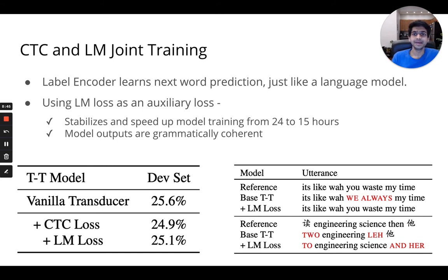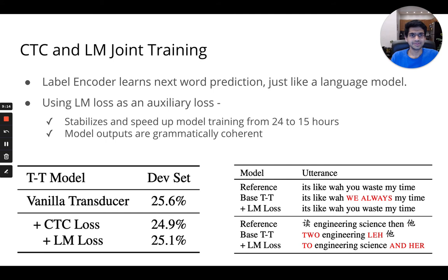The label encoder of the transformer transducer learns to do next-word prediction, just like a language model. Using the LM objective as an auxiliary loss helps stabilize and speed up model training from almost 24 hours to 15 hours. Although this does not give improvement in performance, the model output does seem grammatically more coherent than before.